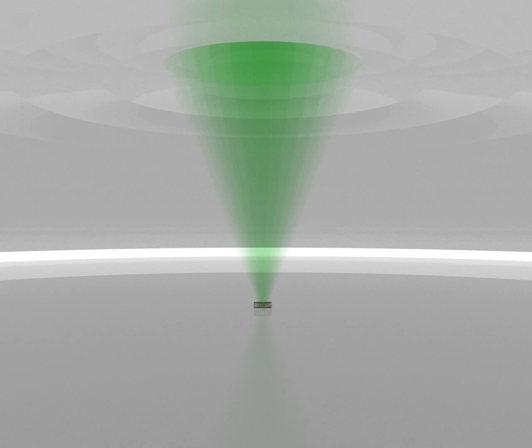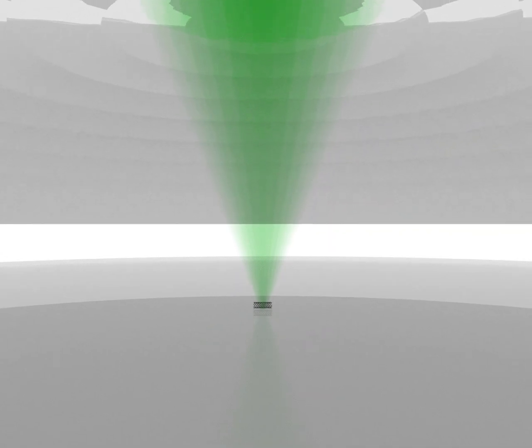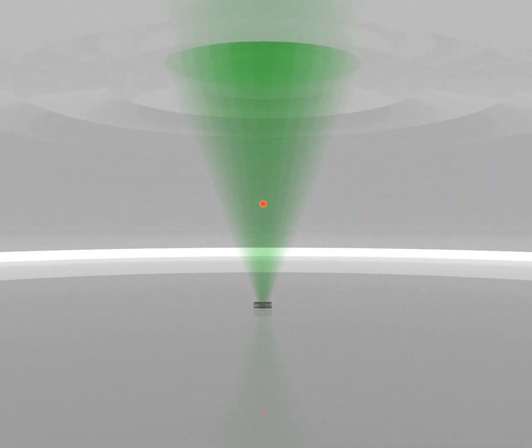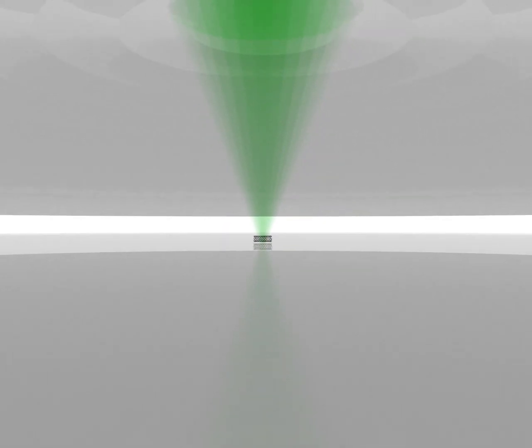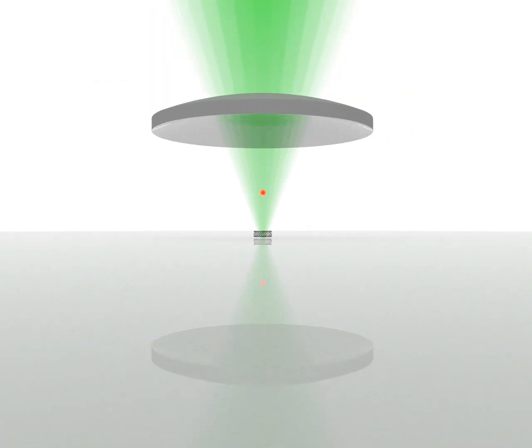Inside, the photons emitted are going back and forth thousands of times before going out through the top. When the distance between the two mirrors is well chosen, a phenomenon called Purcell effect greatly enhances the number of photons emitted per second. And the smaller the cavity, the higher the effect.